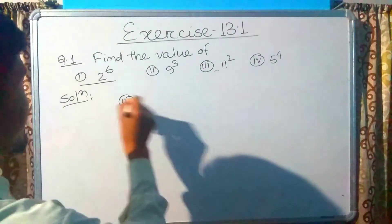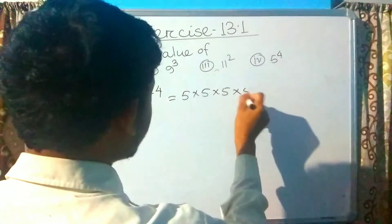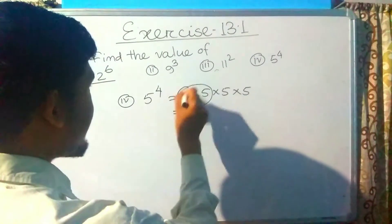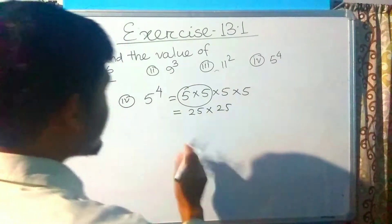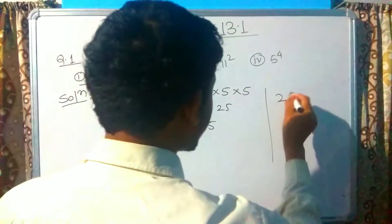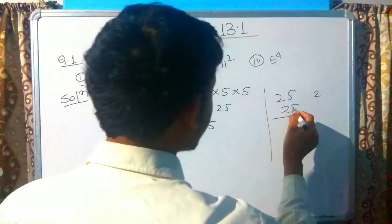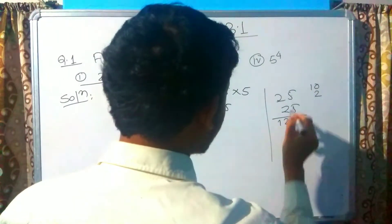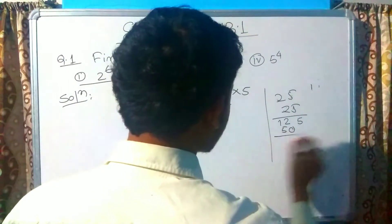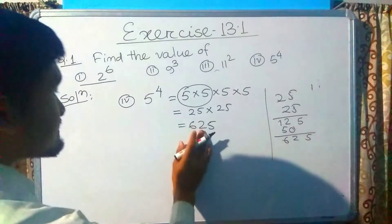Last is 5 raised to the power 4, which is 5 multiplied by 5 multiplied by 5 multiplied by 5 — that is 4 times. 5 multiplied by 5 is 25, and 25 multiplied by 25: 5×5=25, 5×2=10, carry 1, giving 625. So 5 raised to the power 4 is 625.